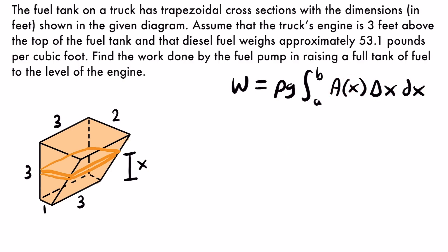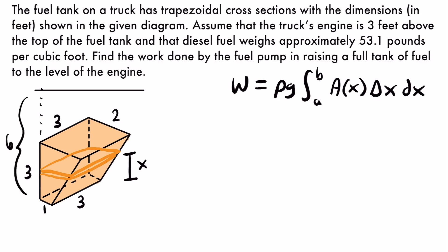The cross-sectional area A(x) in this integral refers to the cross-sectional area of a slice of fuel in the tank, and delta x refers to the distance that any particular slice of fuel would need to travel to reach the level of the engine. The truck's engine is three feet above the top of the fuel tank, so if the tank has a height of three, the engine is an additional three feet higher. That puts the engine at a total height of six feet, so the distance a slice at height x must travel is six minus x. That is the value of delta x.